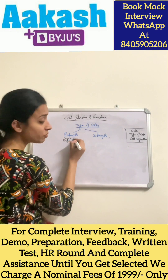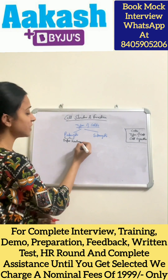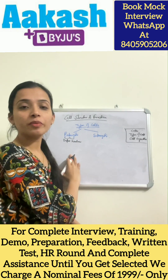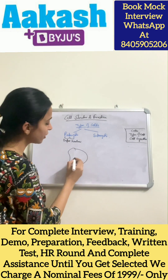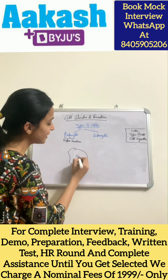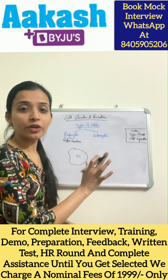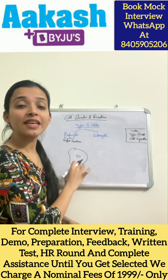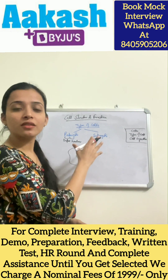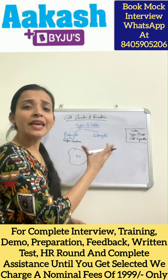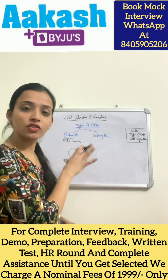'Pro' means before and 'karyo' means nucleus — so prokaryotic means before nucleus. In a prokaryotic cell, DNA is present but it is not surrounded by any membrane; it is present at a specific region in the cytoplasm. Prokaryotic cells are very simple — they are the most ancient types of cells with a very simple structure.